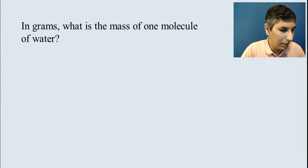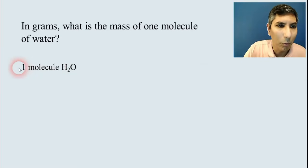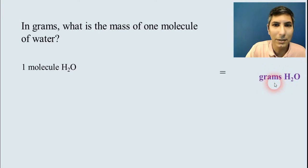Now let's try another example. How about this one here? In grams, what is the mass of one molecule of water? Well, it's not 18.02 grams. I'll tell you that. Because 18.02 grams is the mass of one mole of water, not one molecule. So we have to do a conversion here. I start by writing down one molecule of water and says, what is the mass? And so that means we have to convert to grams down here at the end.